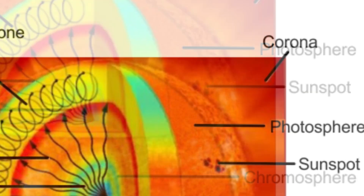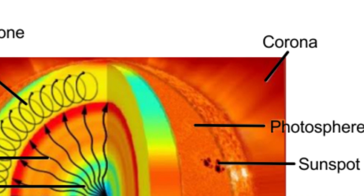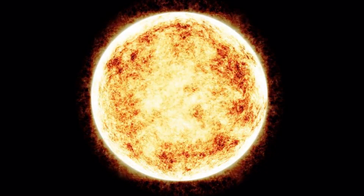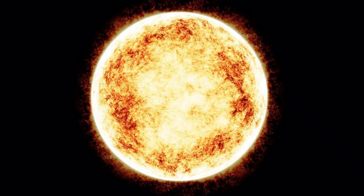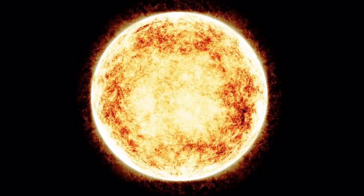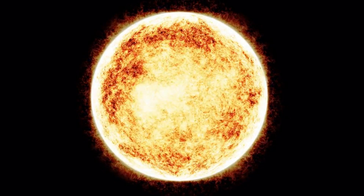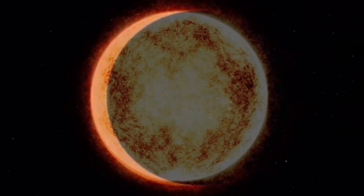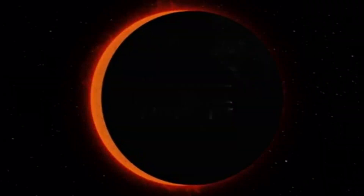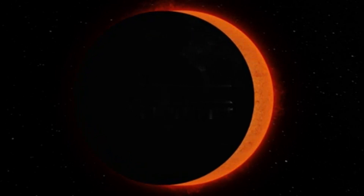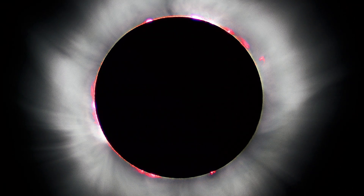The Corona is the outermost layer of the Sun's atmosphere — a hot, ionized gas (plasma) extending millions of kilometers into space. The corona is much hotter than the surface, with temperatures ranging from 1 to 3 million degrees Celsius. It is visible during a total solar eclipse as a white, halo-like glow.